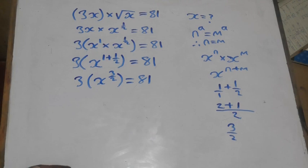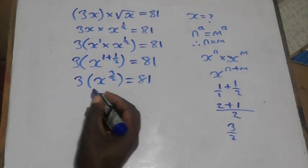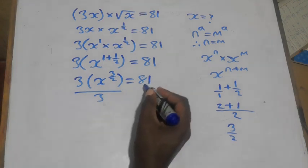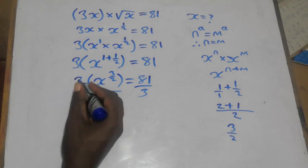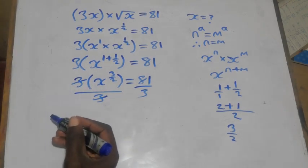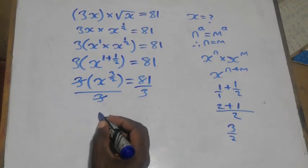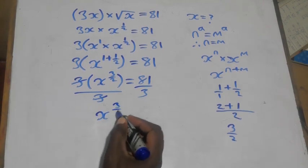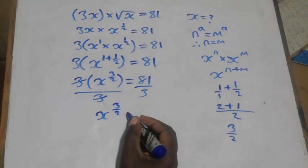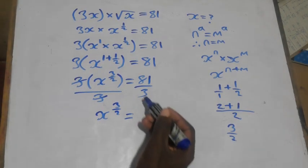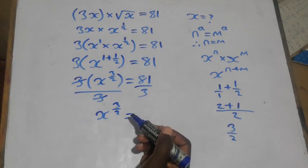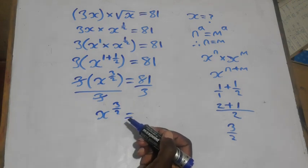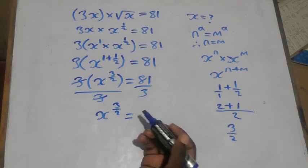At this stage we divide the coefficient 3 on both sides of the equation. We cancel the 3 on the left-hand side, leaving x to the power 3 over 2 equal to 81 divided by 3, which gives us 27.